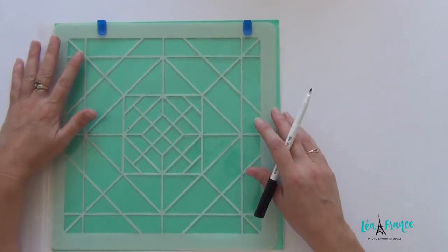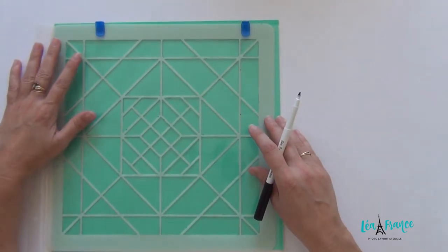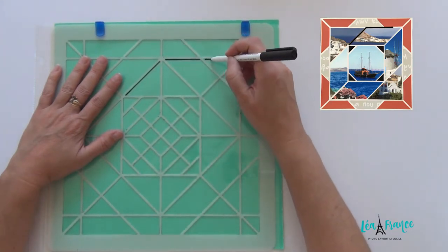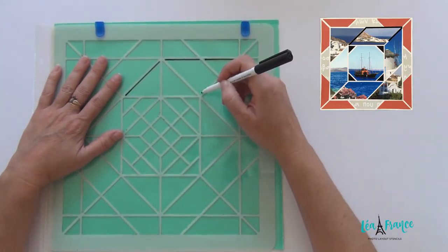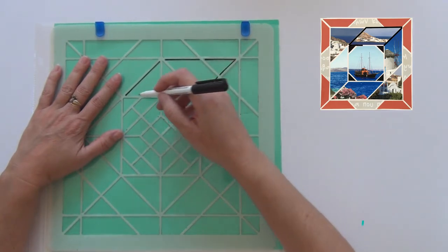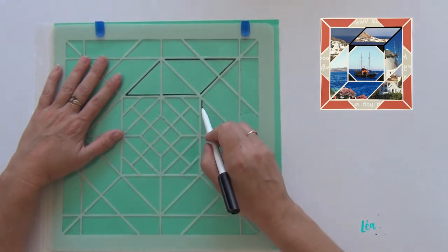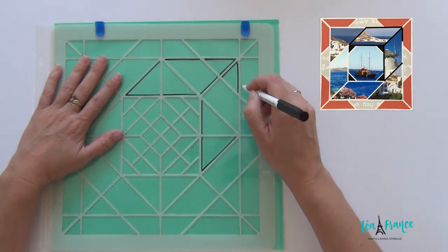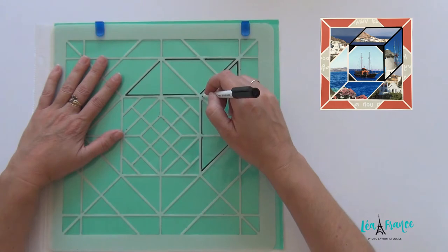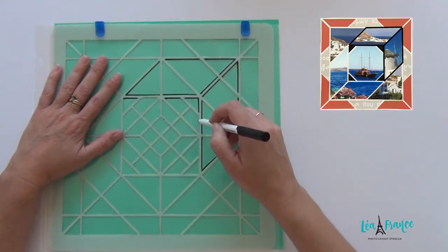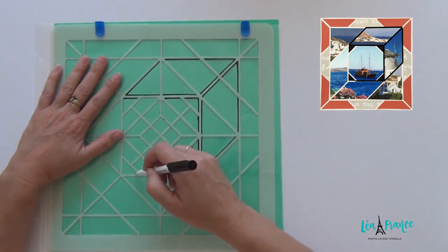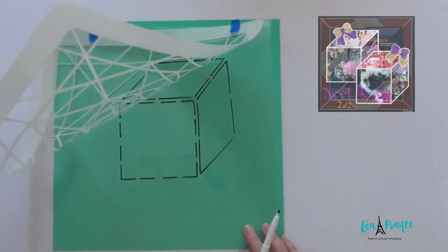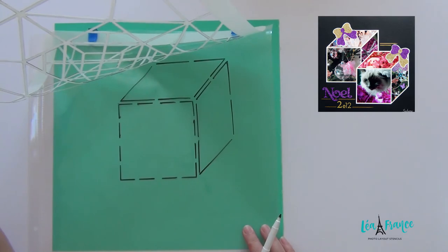So I'm going to show you where is the cube effect and it's right there. So now you can see it, there is a cube in the quilt stencil.